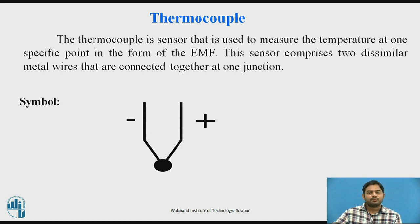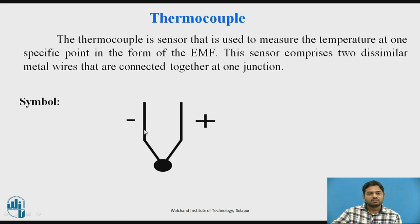Now, coming to the thermocouple — another type of temperature transducer. A thermocouple is a sensor used to measure temperature at a specific point, and it provides an electromotive force (voltage) at the output which is proportional to the temperature. Basically, a thermocouple has two different types of conductors joined at one point, called a junction or hot junction. These two wires are of different materials — for example, copper and iron.